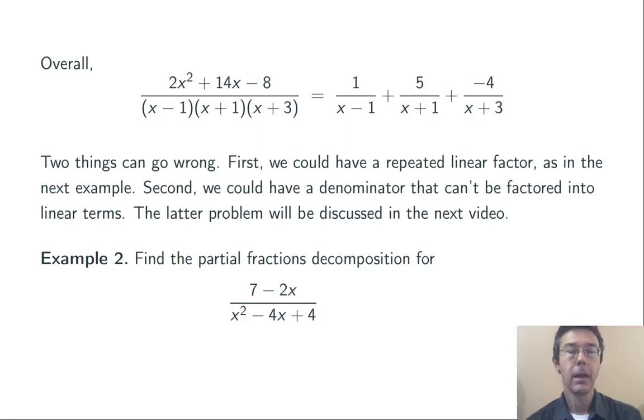Here's another example of the first thing that can go wrong, where we get a repeated linear factor. (7 - 2x)/(x² - 4x + 4) has a denominator that factors to (x - 2)². So it's (x - 2)(x - 2). Our old technique won't work. A/(x - 2) + B/(x - 2) would immediately simplify to (A + B)/(x - 2), and we won't be able to make any progress.